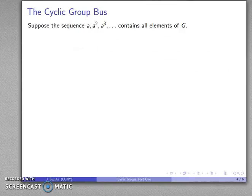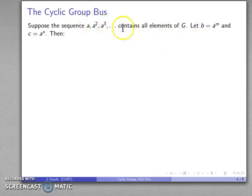Well, suppose that that sequence does actually contain all elements of our group. Well, let's consider two elements. Let B and C be two elements of our group. And because this sequence contains all elements, then B is A to some power, C is A to some power. Well, let's see what happens.